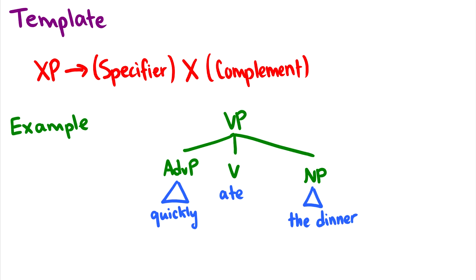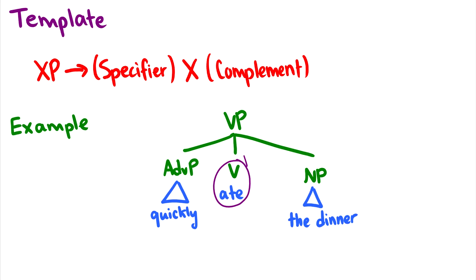We have a template for this. For every phrase, XP where X is a variable, an XP can break into an optional specifier, the X head, and the optional complement. In some cases the complement is optional, but not always. For instance, with a very concrete example, if we have a verb phrase, we have the head of the verb phrase as the verb — so 'ate'. If you have a verb, you will always have a verb phrase and the verb will be the head of the verb phrase.